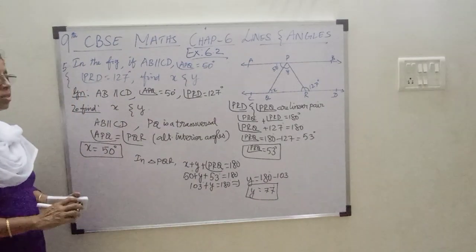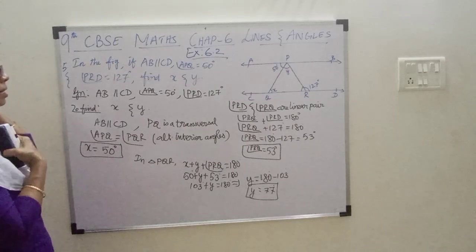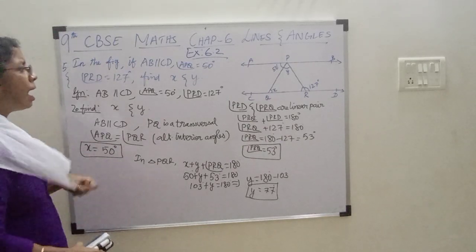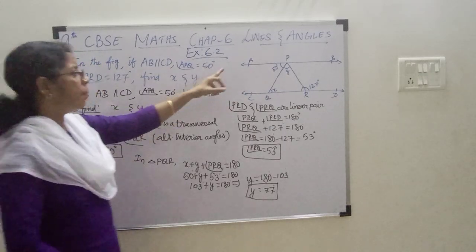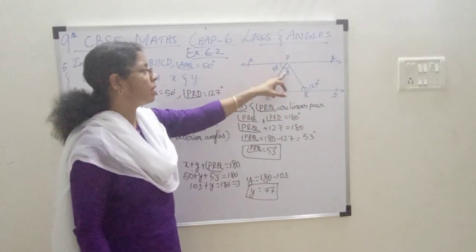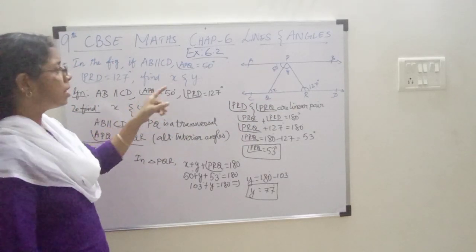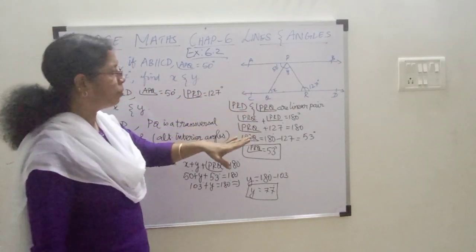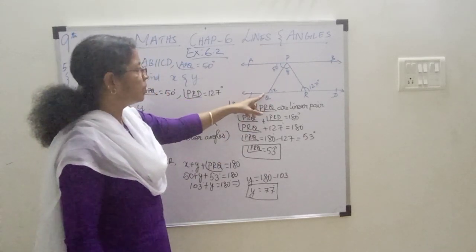That's all. Understood this? See, AB is given as parallel to CD, and angle APQ is given as 50, then angle PRD is given as 127. X and Y are unknown. So, how are we solving? Since AB and CD are parallel, PQ is a transversal.